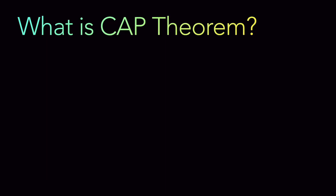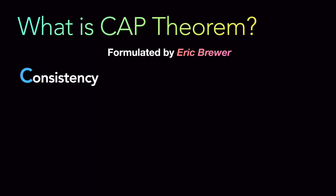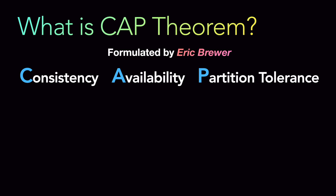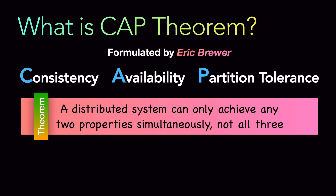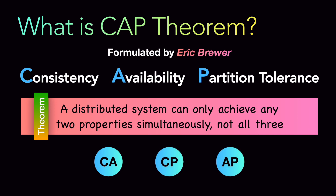So let's start with what is CAP theorem. CAP theorem was formulated by Eric Brewer. C stands for consistency, A stands for availability, and P stands for partition tolerance. This theorem basically states that a distributed system can only achieve any two of these properties simultaneously, but not all three together. So you can either have consistency and availability, consistency and partition tolerance, or availability and partition tolerance in your distributed system.